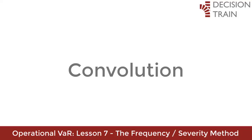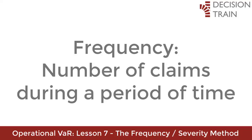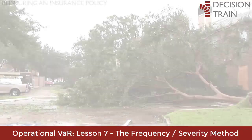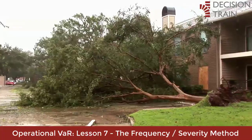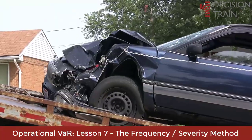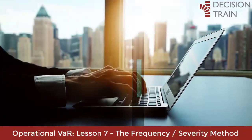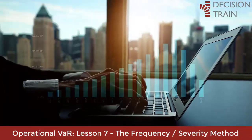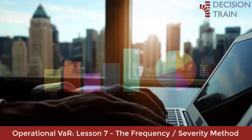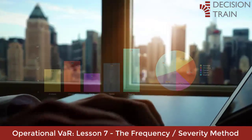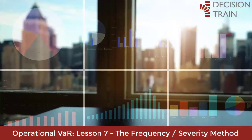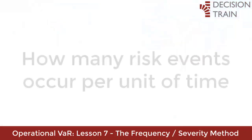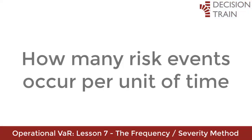I will explain convolution in detail later. In the frequency-severity method, frequency refers to the number of claims that an insurer anticipates will occur during a given period of time. If the frequency is high, a large number of claims are expected to occur. When we move to the analysis of operational risks in a bank or financial institution, we stop thinking about insurance claims and begin to think in terms of recorded risk events — the concept, however, remains the same: how many risk events occur per unit of time, for example one year.